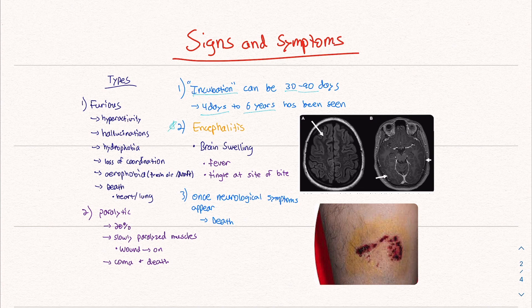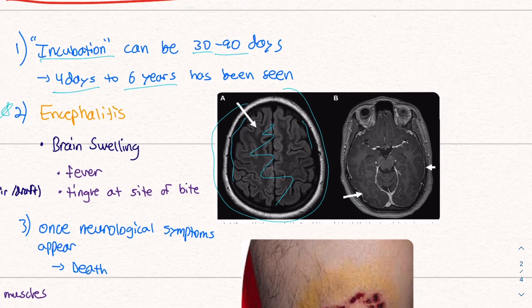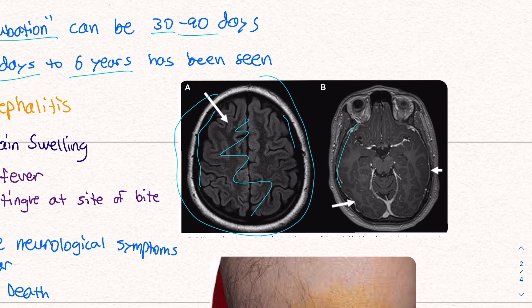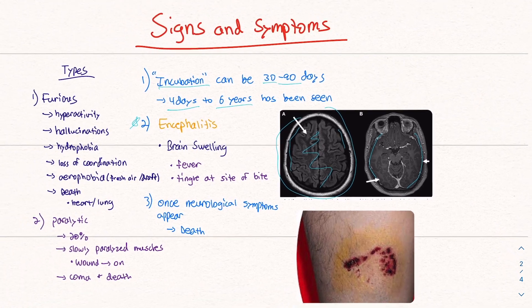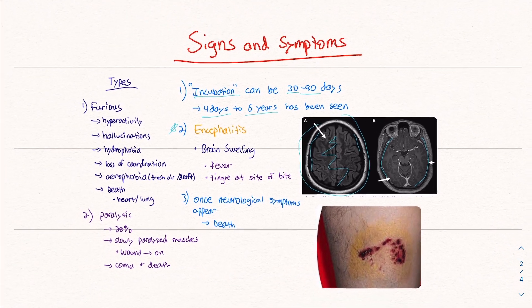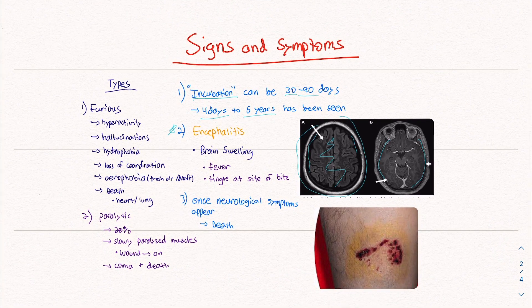I'm not a radiologist, but I believe this picture I have describes it. As you can see, there are some spaces between the brain and the skull. There's some good space in there. And then the brain swells up and you can see that there's not a whole lot of space. The brain swells up and it causes all kinds of terrible symptoms.